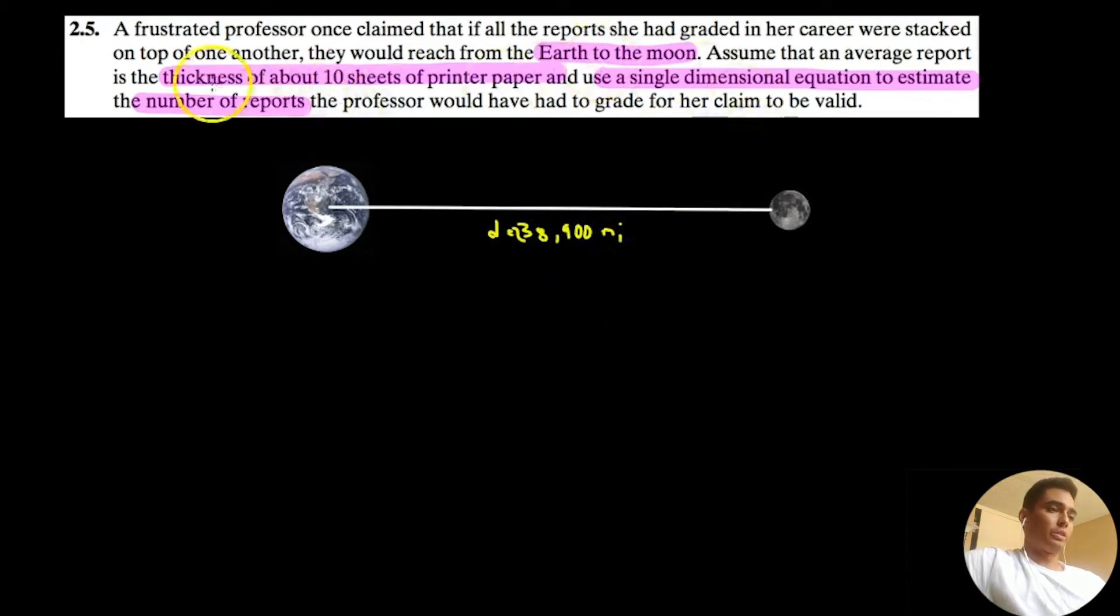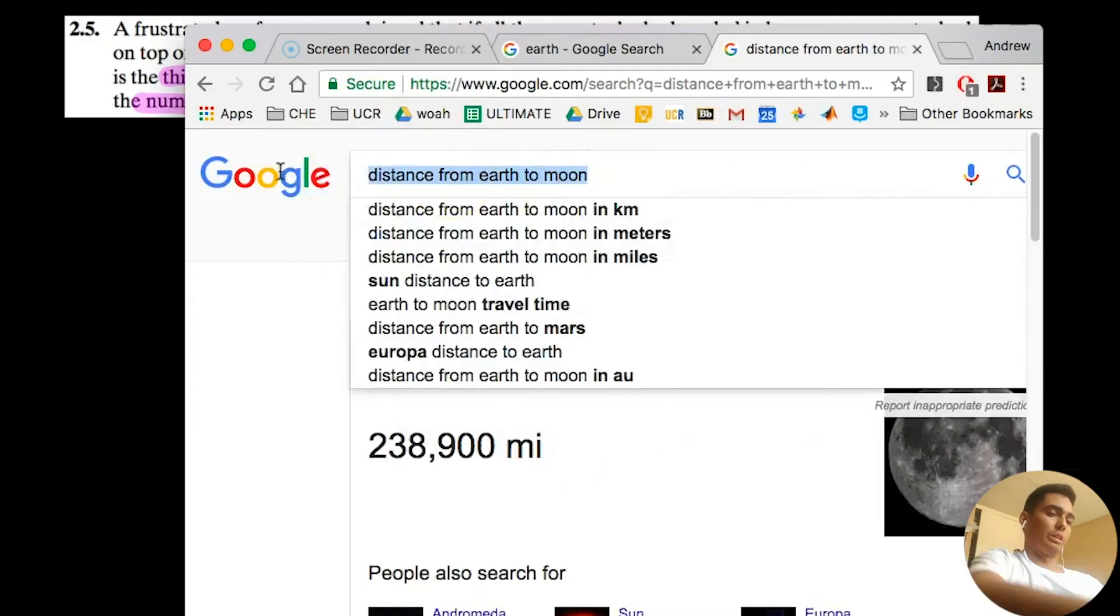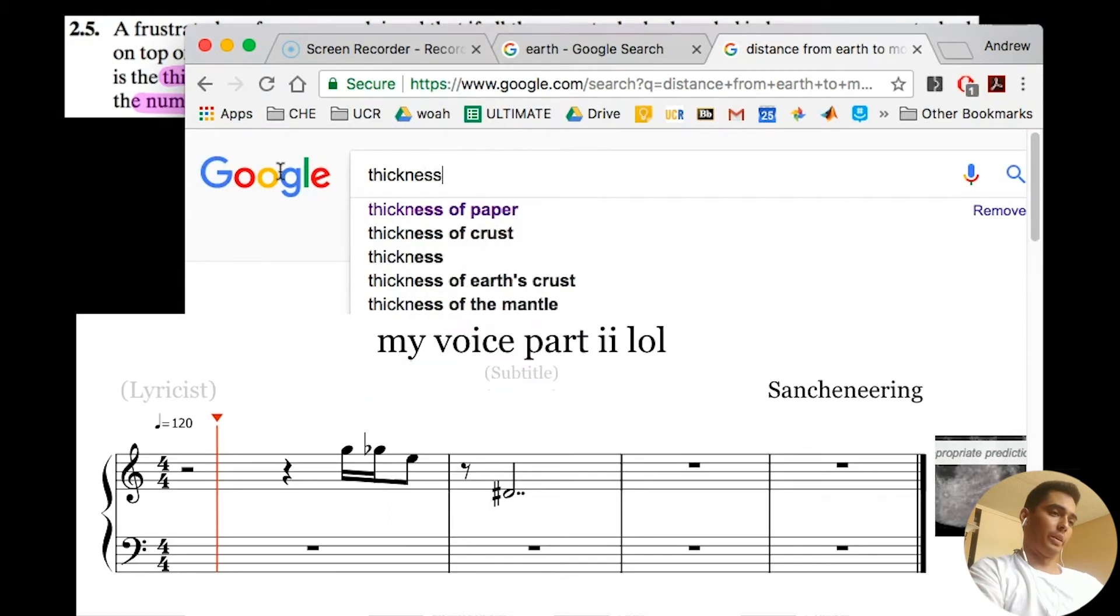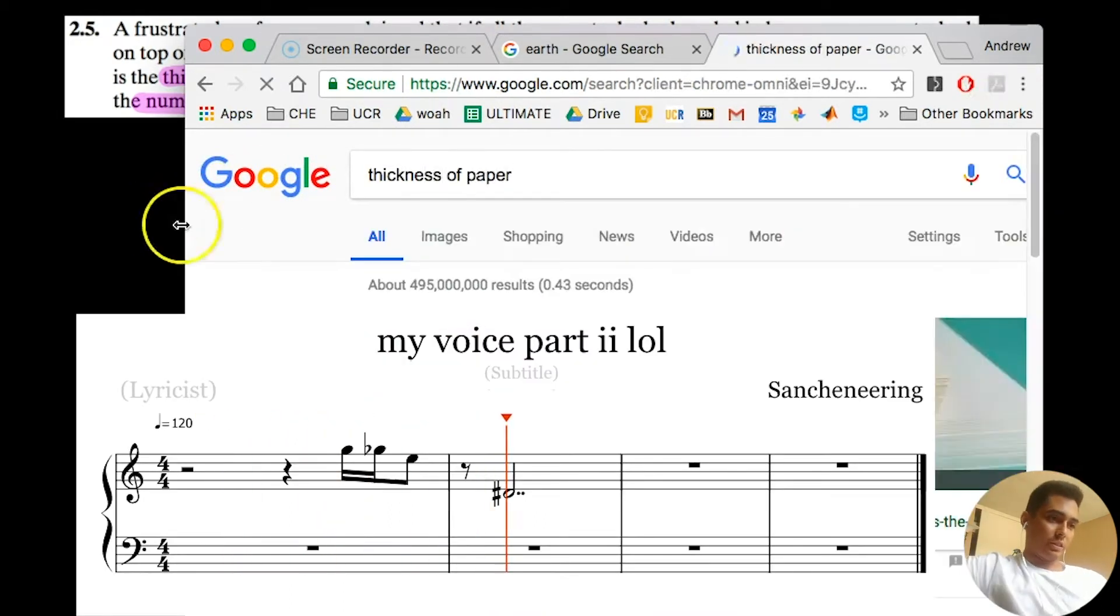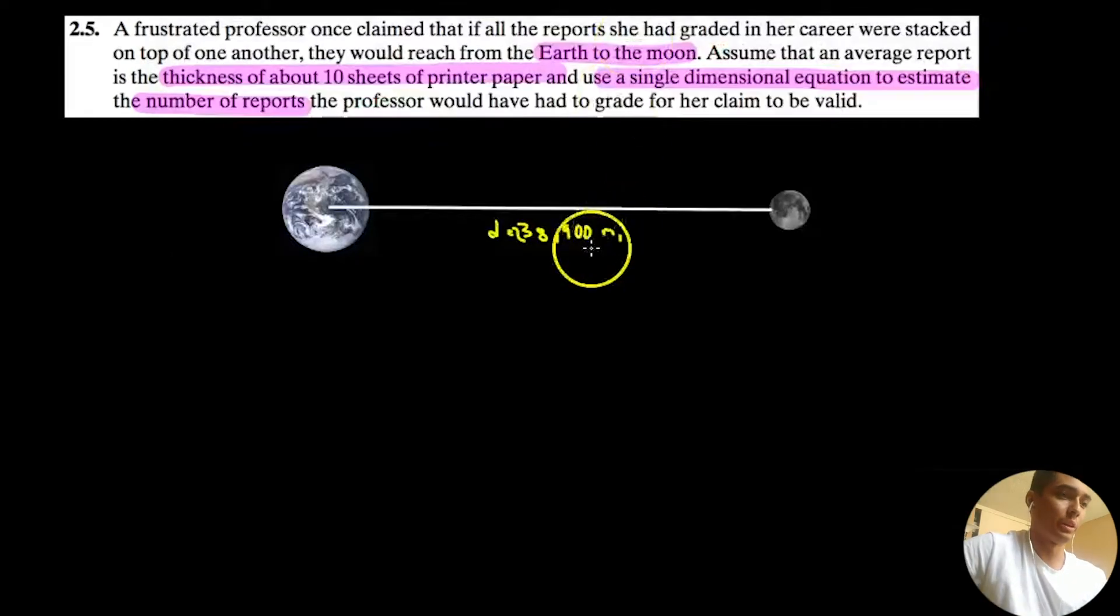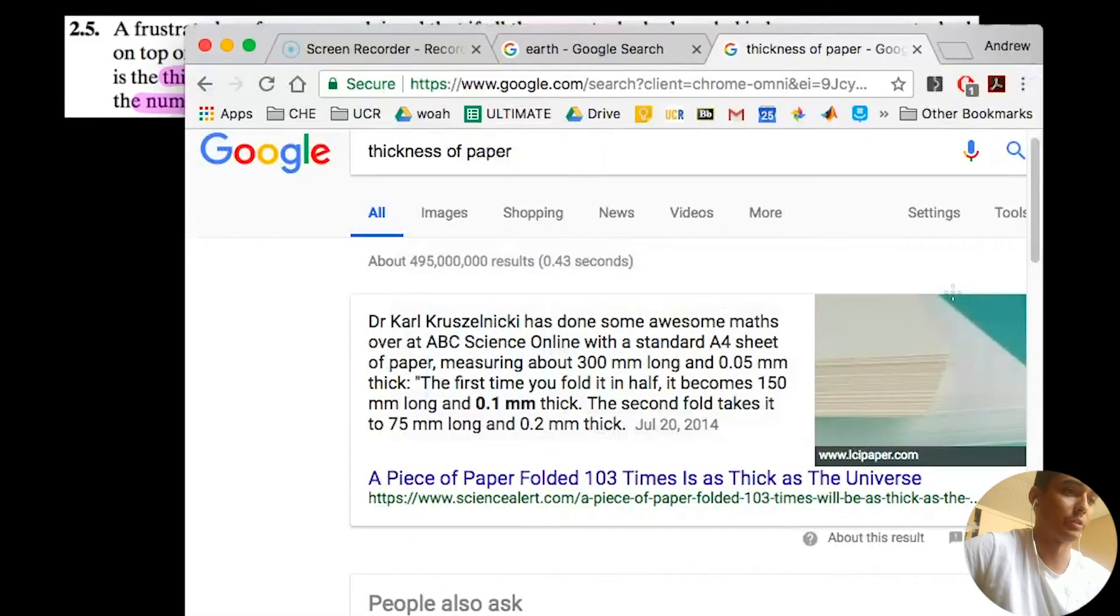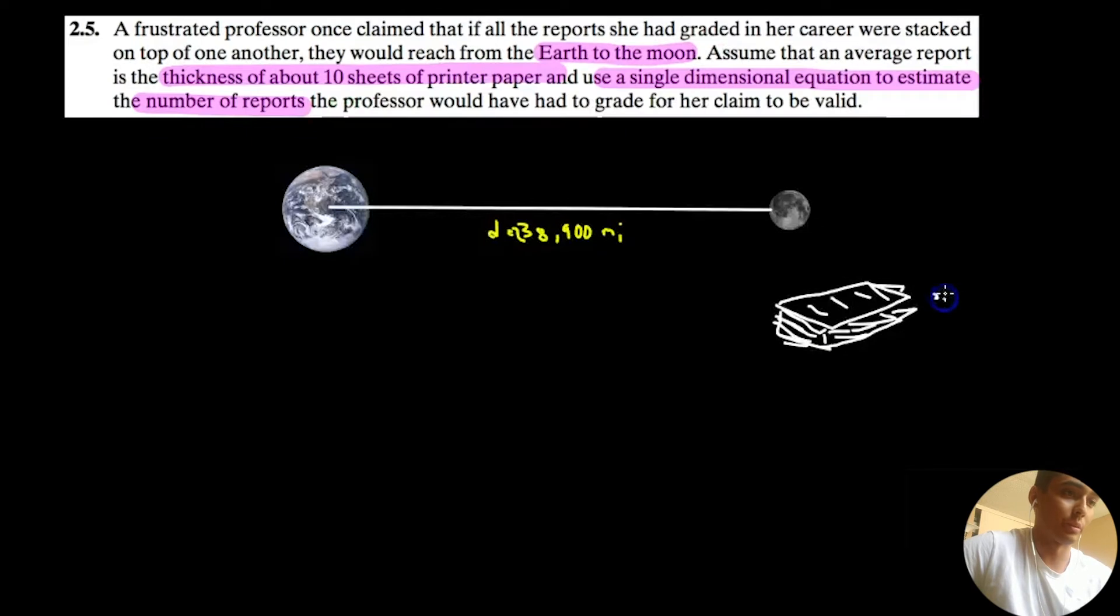And one sheet of paper, 10 sheets of paper is about one report on average. And we need to know the thickness of paper. 0.05 millimeters thick according to this. So again, I'm an engineer, not an artist. So this is my sheet of paper. The thickness of this tiny little sheet of paper is 0.05 millimeters.